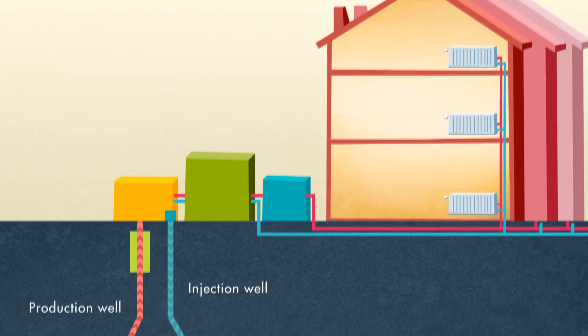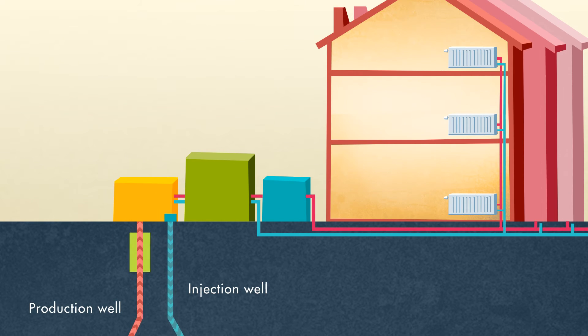In some cases, the same geothermal resource can be used to produce electricity as well as heat. This is known as a combined heat and power plant, CHP, and is a very efficient way to use geothermal energy.